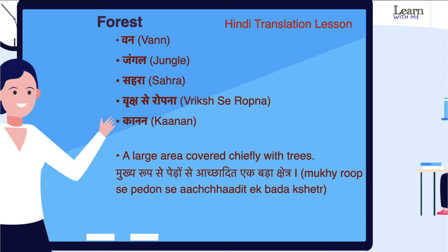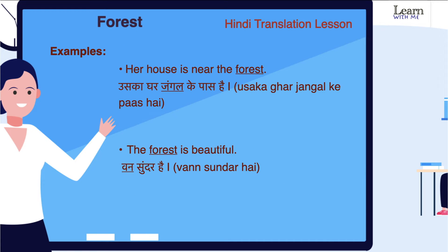Now let us understand through examples. Our house is near the forest — uska ghar jungle ke paas hai. The forest is beautiful — jungle sundar hai.